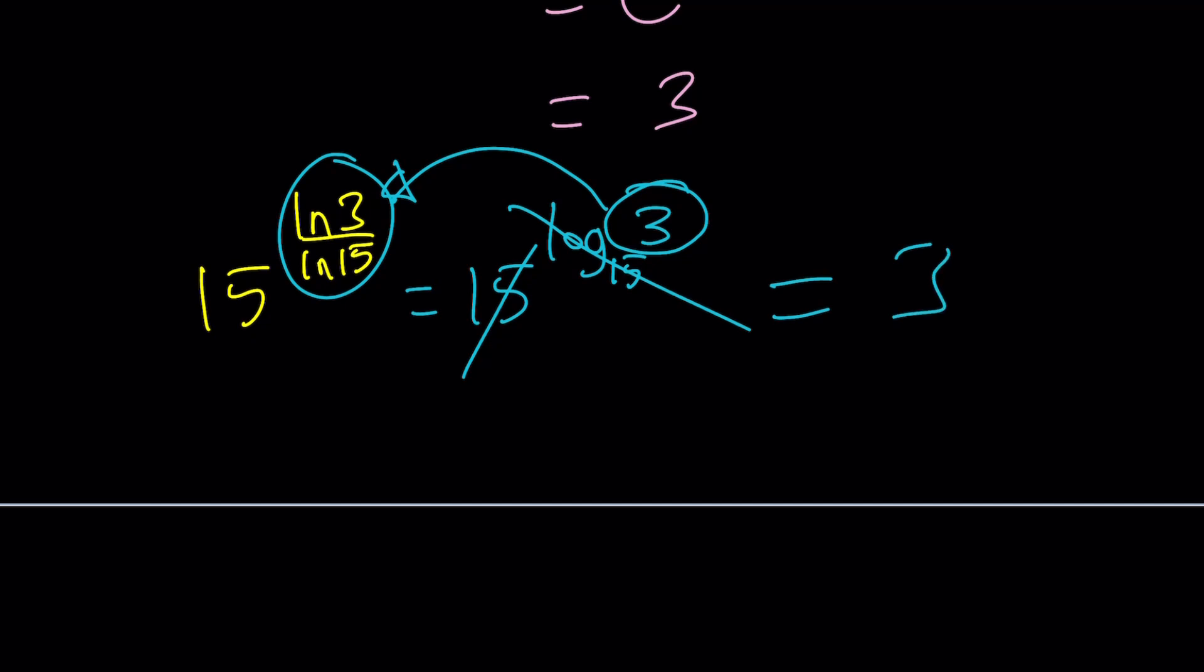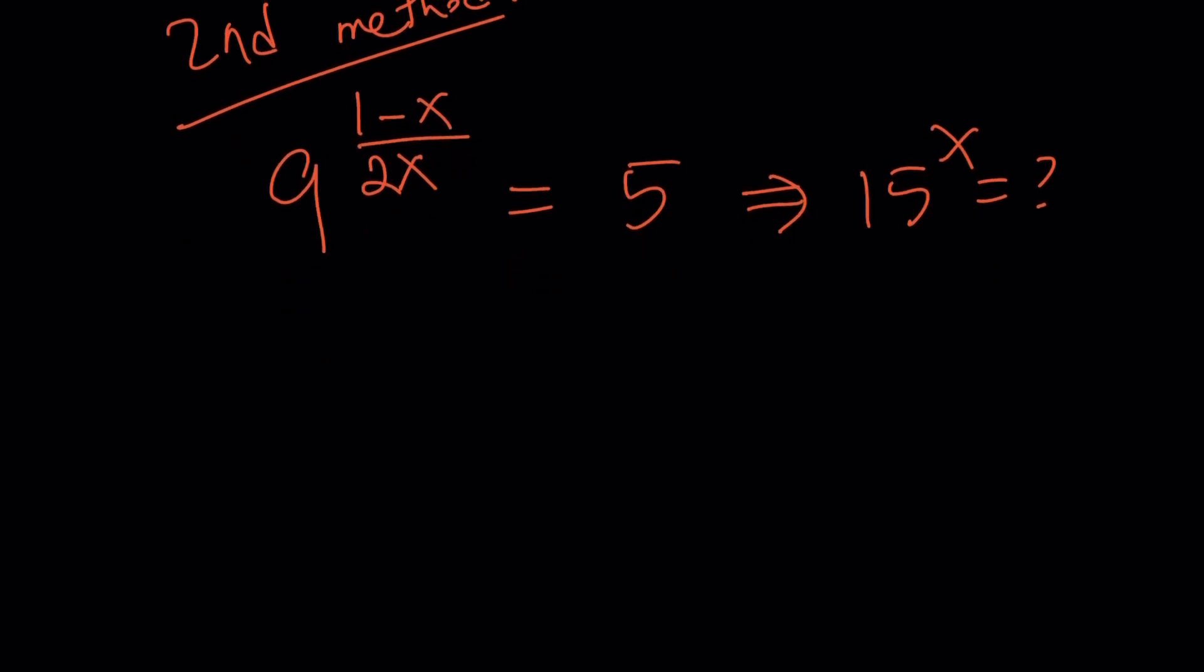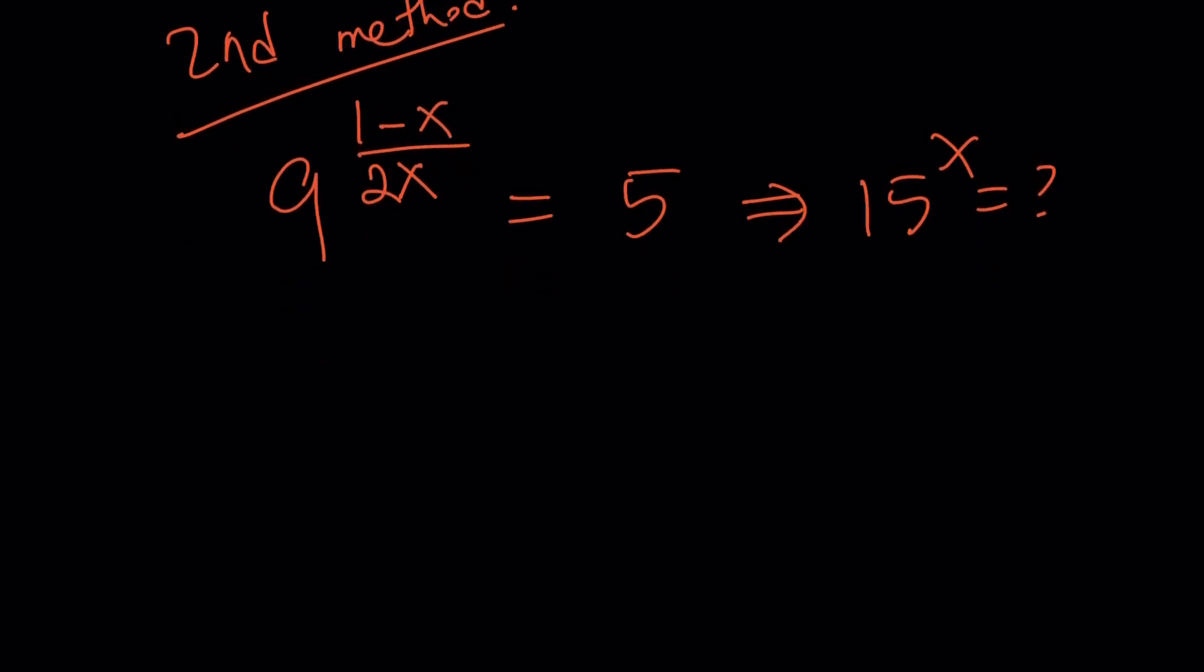Let's take a look at the second method, and I'll ask you to compare these methods. Please let me know what you think. Let's rewrite the problem: 9 to the power 1 minus x over 2x equals 5. I'm supposed to find 15 to the power x. You're probably thinking there must be a nicer way to do it, and here's what it is.